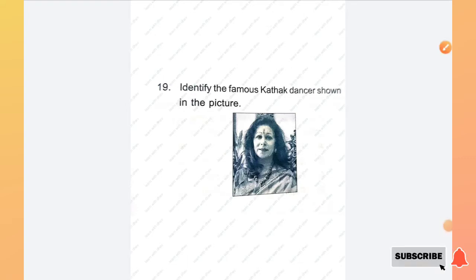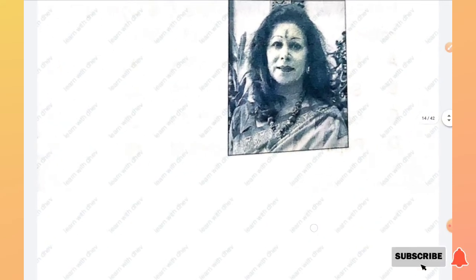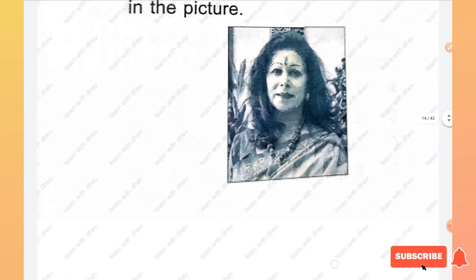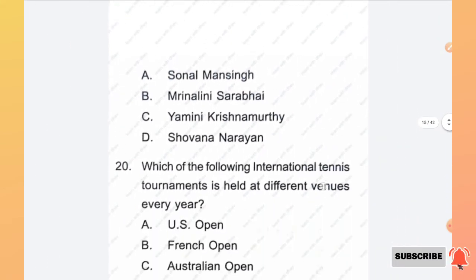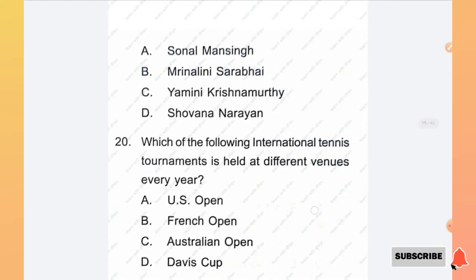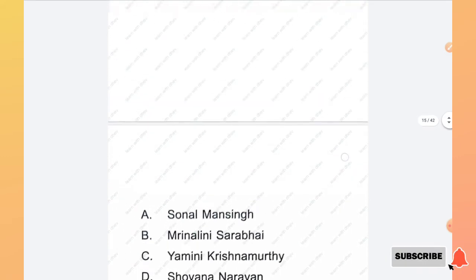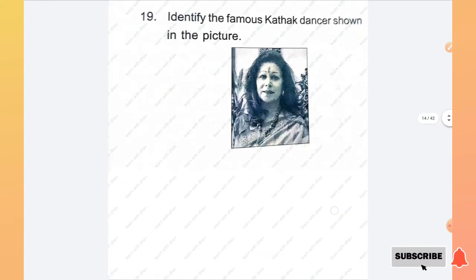Question number 19: Identify the famous Kathak dancer shown in the picture. Options are Sonal Mansingh, Mrinalini Sarabhai, Yamini Krishnamurthy, Shovana Narayan. The right answer is option D, Shovana Narayan.